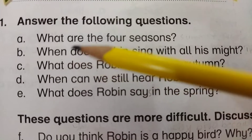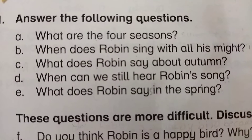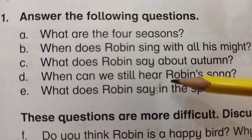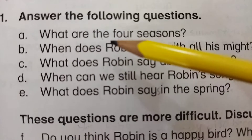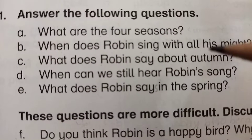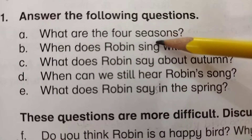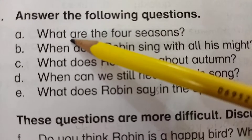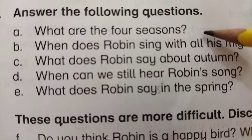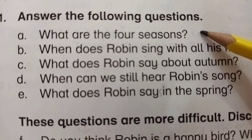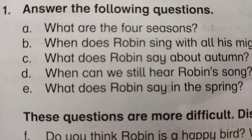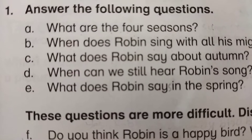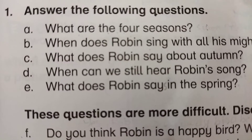Number 1 — they are asking us: what are the 4 seasons? It's a common question that you must have been learning from your earlier classes. You need to understand how to phrase out the answer. We'll start our answer from the question itself: 'The 4 seasons are:' — colon means these 2 dots written in a vertical position. The 4 seasons are: summer, winter, autumn and spring.